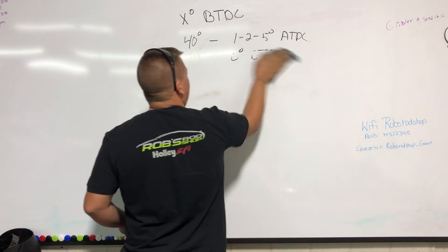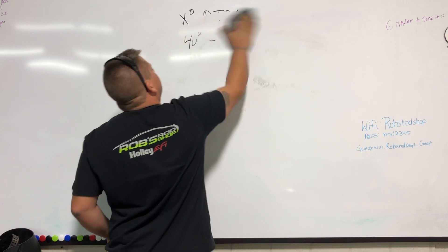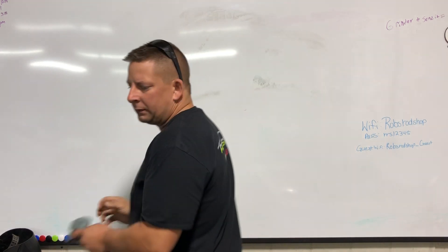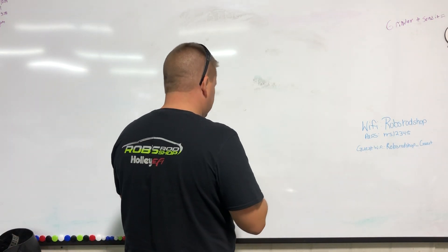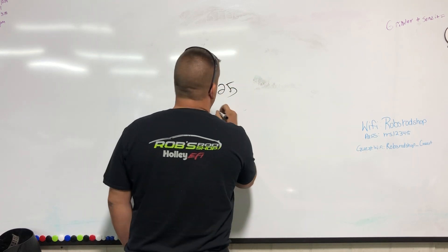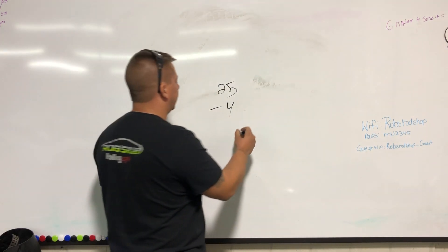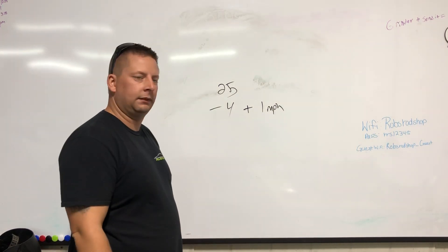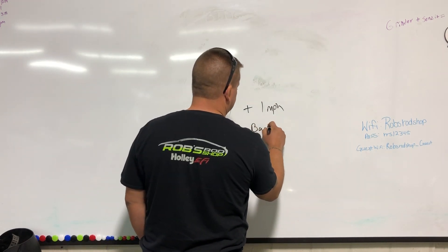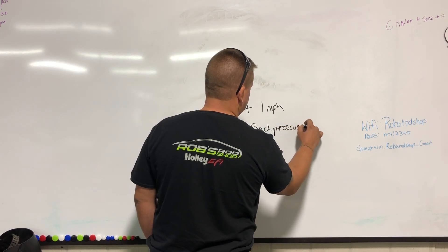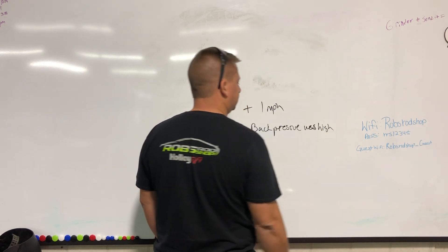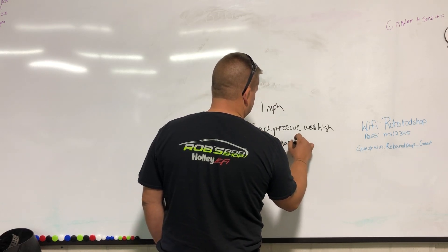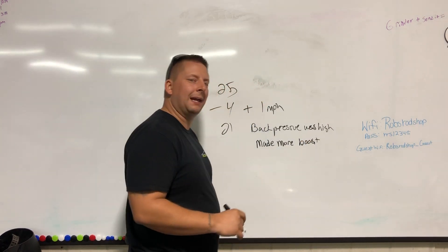This is the reason that turbo engines do not mind low timing. A turbo engine has a very big window of timing. You will have a scenario where you're lighting the fire at 25 degrees, you pull out four degrees and the car picks up a mile an hour. How did that happen? You go back and at 21 degrees of timing the back pressure was high, and that added back pressure made more boost and in turn made more torque down low, and therefore the car picked up.